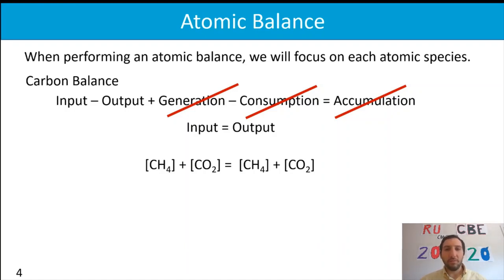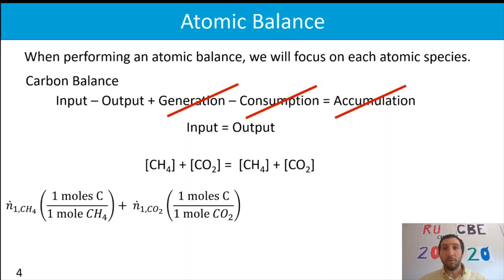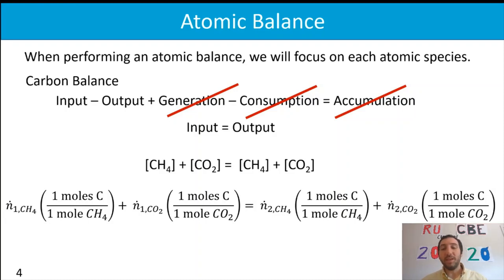We're going to figure out how many moles of carbon are in each methane or carbon dioxide molecule and convert all molecular species into moles of carbon. We take the molar flow rate of methane in stream one and multiply by one mole of carbon per mole of methane. We do the same for carbon dioxide in stream one — one mole of carbon per mole of CO₂ — and set that equal to the carbon contributions from methane and carbon dioxide exiting in stream two.